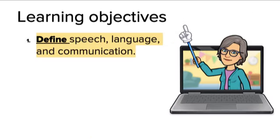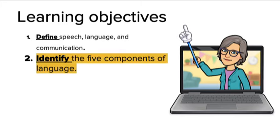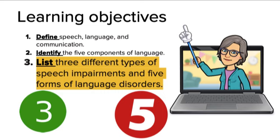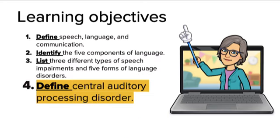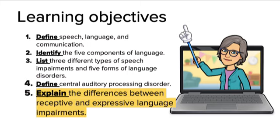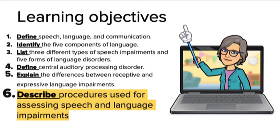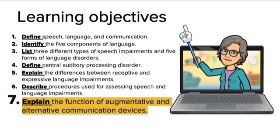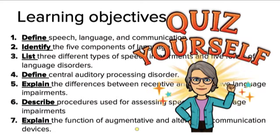Let's look at our learning objectives for this week. You should be able to define speech, language, and communication — know all three, how they're different, and how they're the same. You should be able to identify the five components of language, list three types of speech impairments and five forms of language disorders, define central auditory processing disorders, explain the difference between receptive and expressive language impairment, understand assessment procedures, and explain the function of augmentative and alternative communication devices. As you go through this work, break it up into chunks, quiz yourself repeatedly so that you can really remember this content.